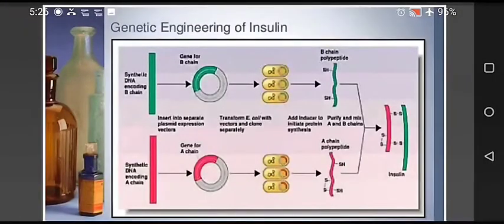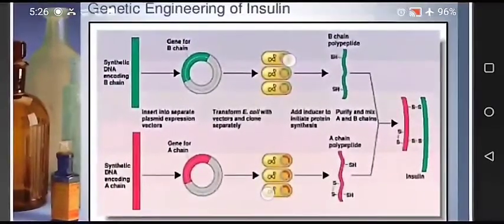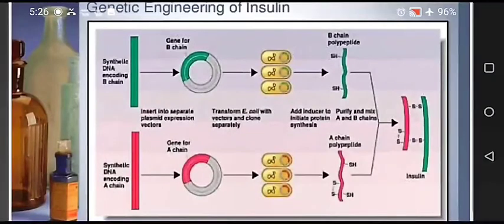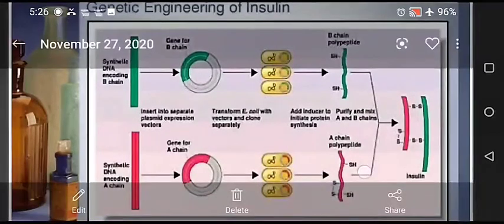This can be seen in the diagram: chain A and chain B were introduced separately, and when produced in bulk, they were linked together to produce mature insulin. This was a very successful venture in the field of medical science.